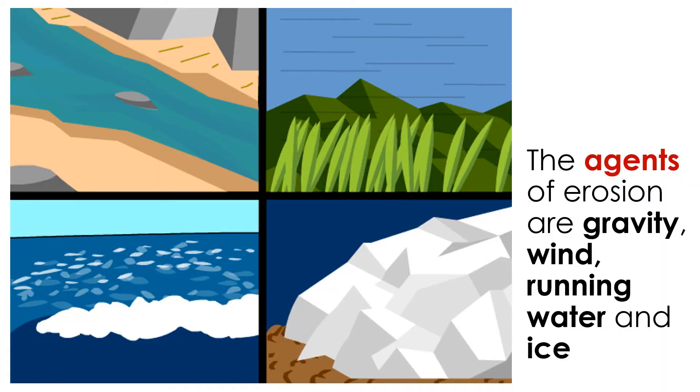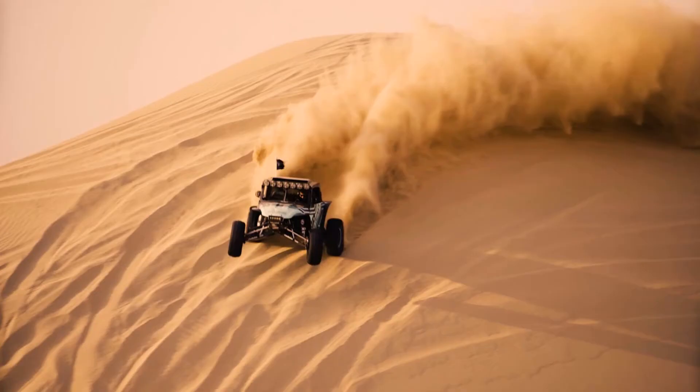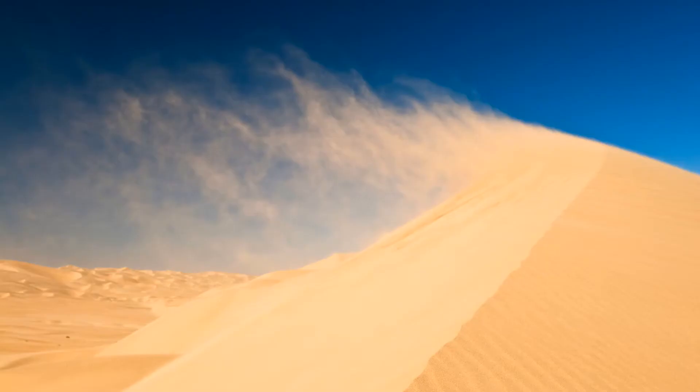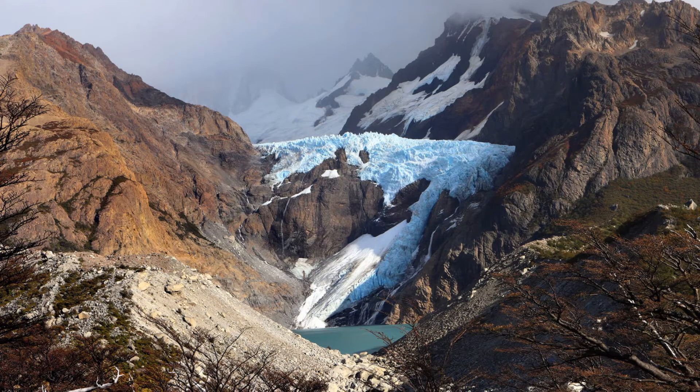Regardless of how the sediment forms, it is almost always transported from its place of origin by agents of erosion: gravity, wind, running water, and ice. Sediment has a tendency to move downhill with gravity. It will blow in the wind. And when there is turbidity, sediment particles suspended in water will move in the direction of the current, or downhill in the direction of gravity. The growth of glaciers and ice sheets, which till the earth as they advance over the landscape, can also move sediment.